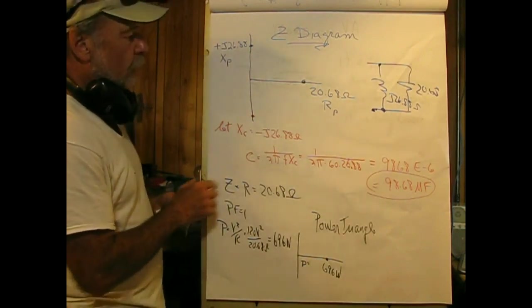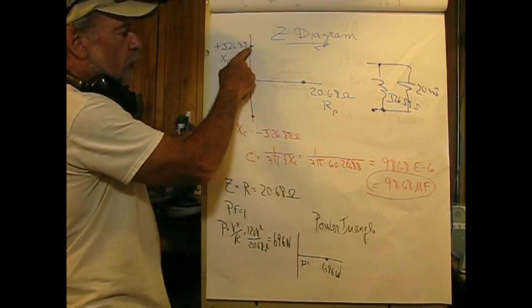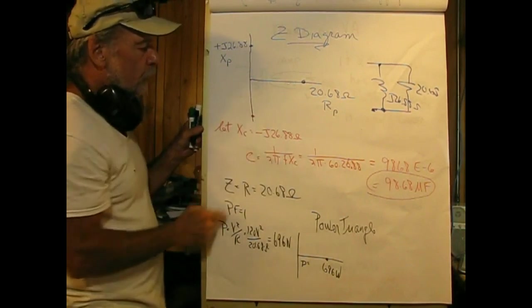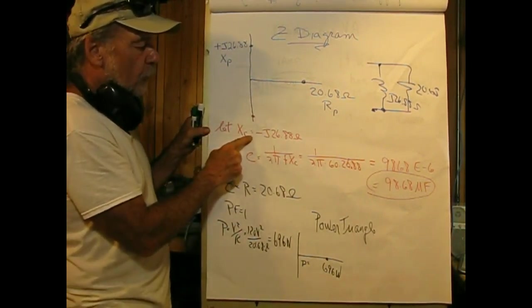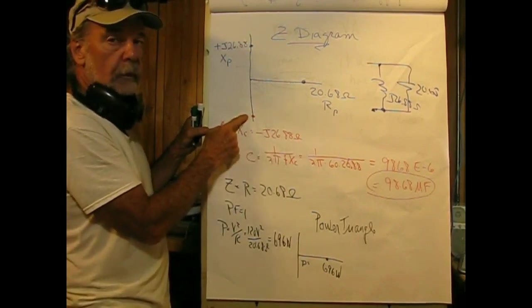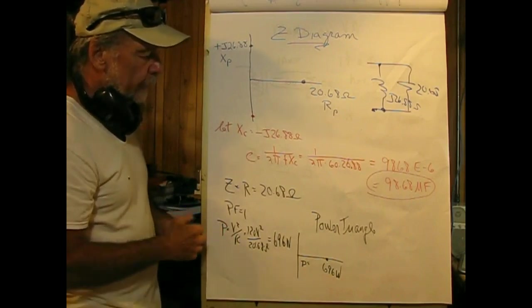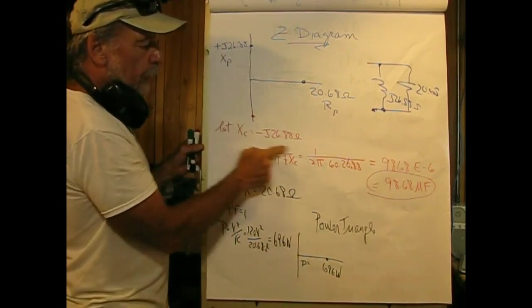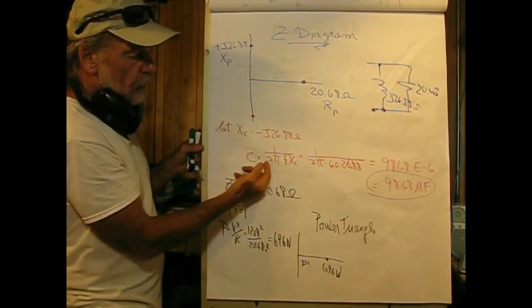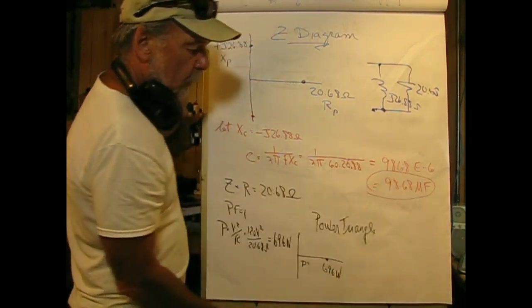If we look at the Z diagram, we have the real component here and the imaginary component here, which is our X parallel value. We're now going to let X of C equal negative J 26.88 ohms. We're doing the same basic thing we did before with current, except now we're doing it with reactance. Once we know what this is, just change the sign, and then solve for C as we did before, and that comes out to 98.68 microfarad.